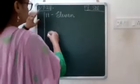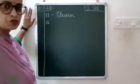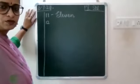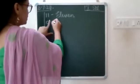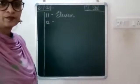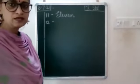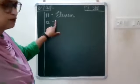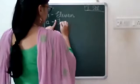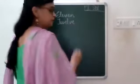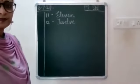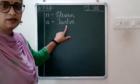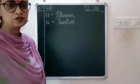Then leave a line, write 12. Leave a finger space, put a small dash, leave a finger space, then again leave one finger space, write capital T-W-E-L-V-E, 12.